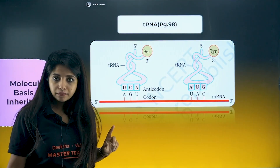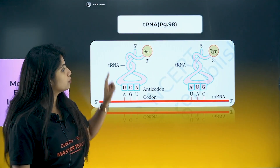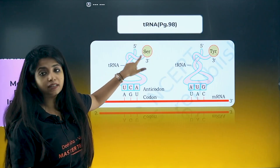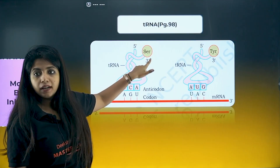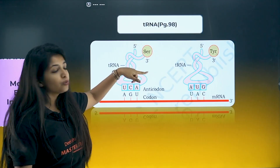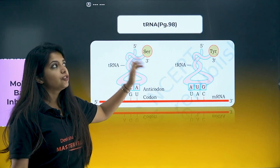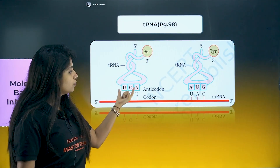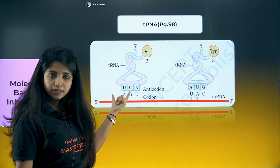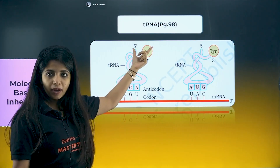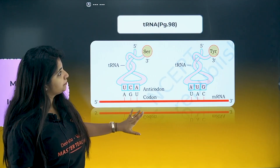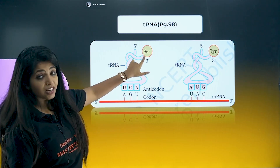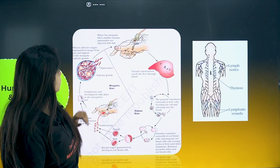This is the tRNA diagram. At what end does the amino acid come and bind? At the 3' end. This process is known as amino acylation or charging of tRNA. The anticodon loop and amino acid binding loop should be labeled. The 3' end — don't forget.